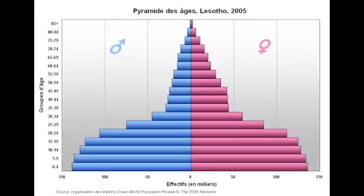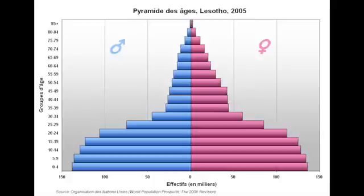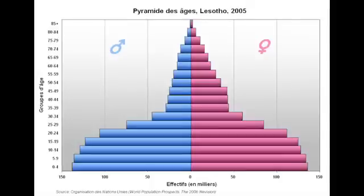Now we're going to look at population pyramids. We won't study a Stage 1 country since there aren't actually any countries in Stage 1, so we'll go straight to Stage 2. The country chosen is Lesotho, which is a country within South Africa. You can see very clearly that birth rates are very high, but not many people live over 34 years old. It starts off like a pyramid shape, which is what you'd expect from an LEDC and a less developed country.